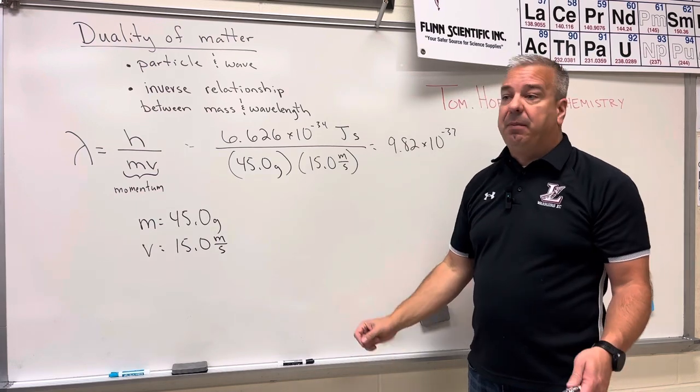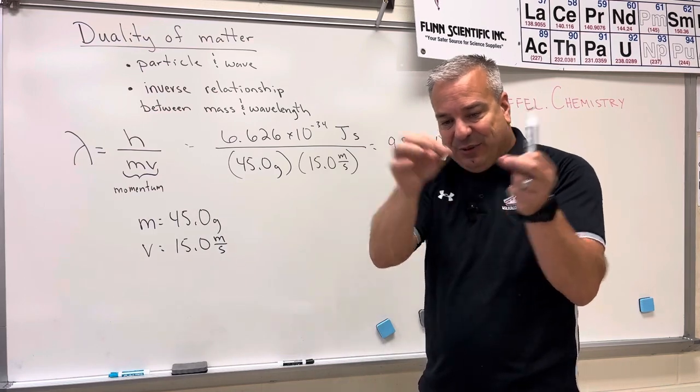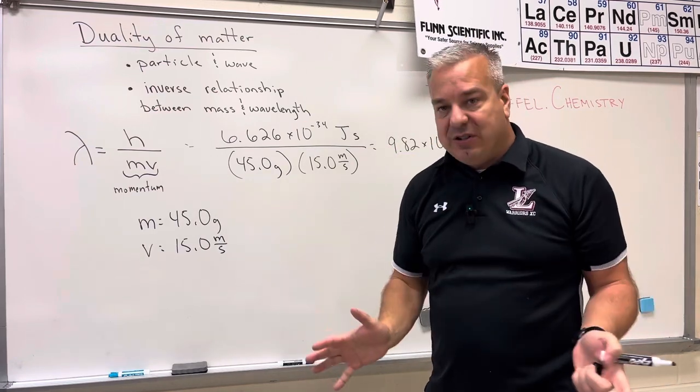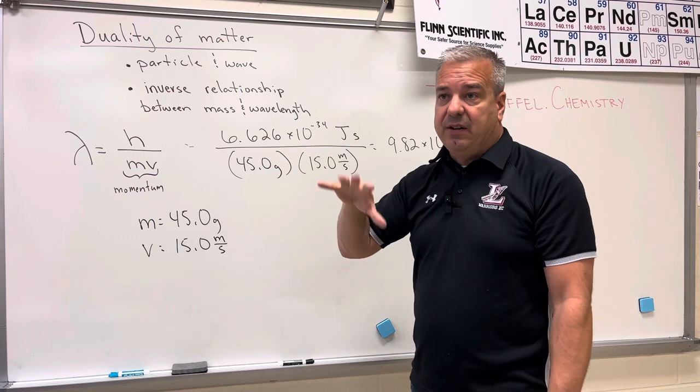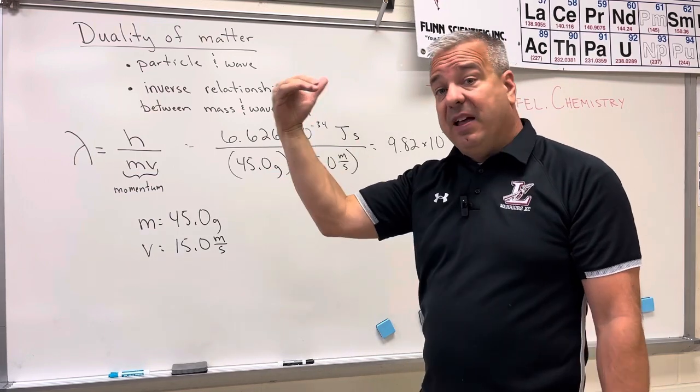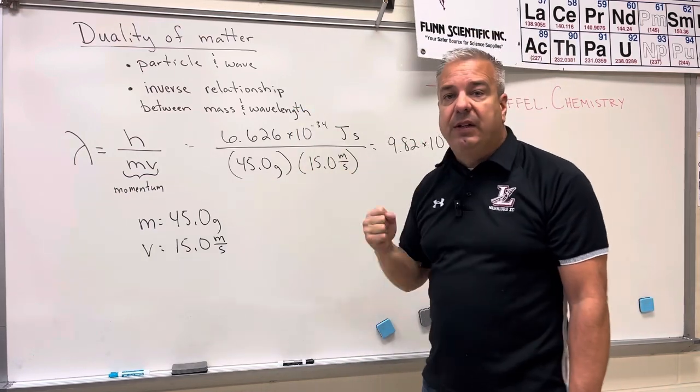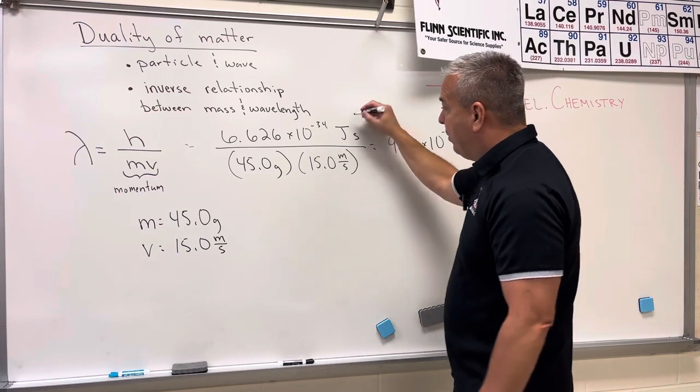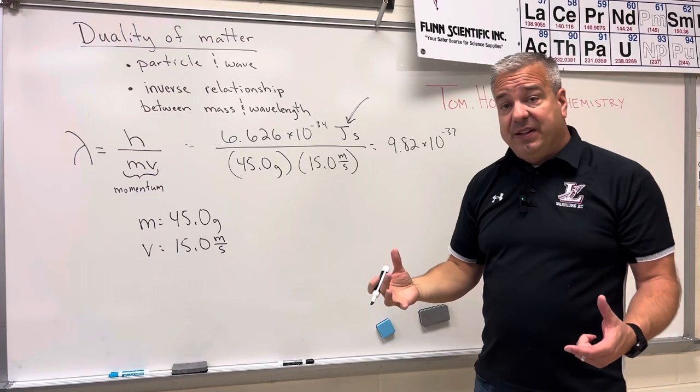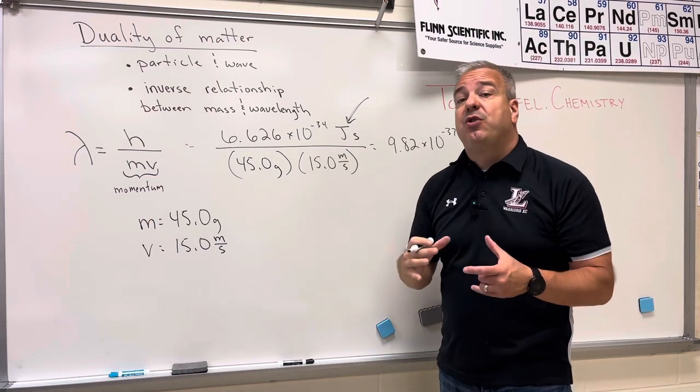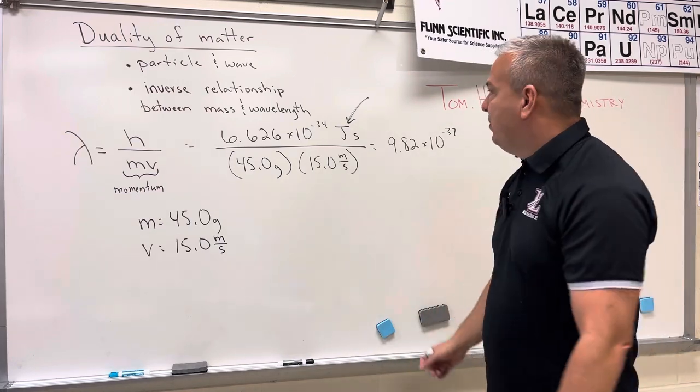For a lot of beginners in chemistry, they don't realize that these problems can have this inconsistency. They are so used to having problems where all the units just magically work out. But when you get to the level of high school chemistry, high school physics, or introductory college class, you realize you really have to pay attention to your units. And more specifically, we're going to concentrate on what is a joule exactly, because most people don't know that a joule is just made up of a whole bunch of other units.